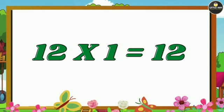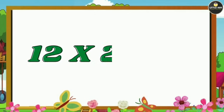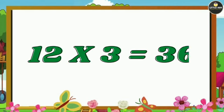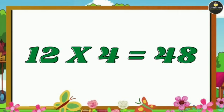12 ones are 12. 12 twos are 24. 12 threes are 36. 12 fours are 48.